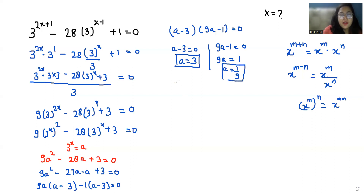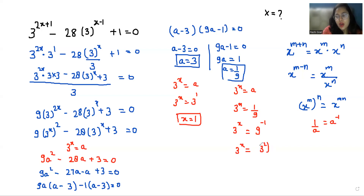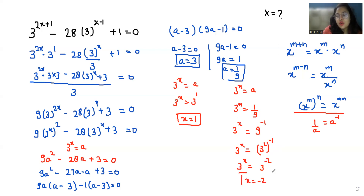Since we used the substitution a = 3^x, putting 3^x = 3 means 3^x = 3^1, so the value of x is 1. For the second case, 3^x = 1/9. By the exponent rule, 1/a = a^(−1), so 3^x = 9^(−1) = (3²)^(−1) = 3^(−2). Comparing both sides, the value of x is −2.